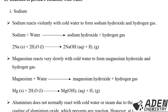Sodium reacts violently with cool water to form sodium hydroxide and hydrogen gas. Remember, when a metal is dissolved in water we form metal hydroxide and hydrogen gas. The balanced chemical equation is: 2 moles of sodium (solid) reacting with 2 moles of water (liquid) gives 2 moles of sodium hydroxide (aqueous) and also 1 mole of hydrogen gas.